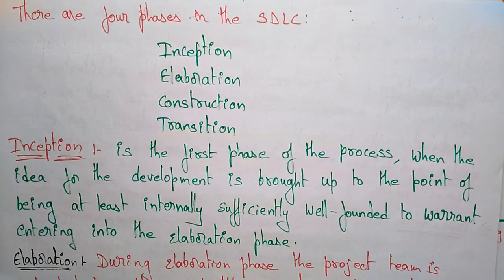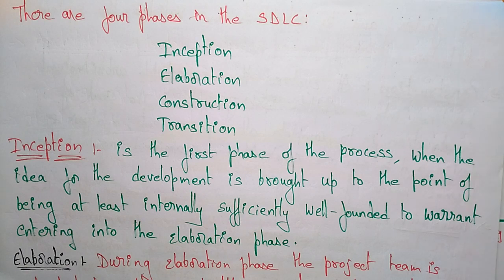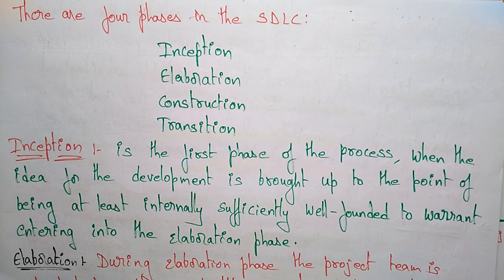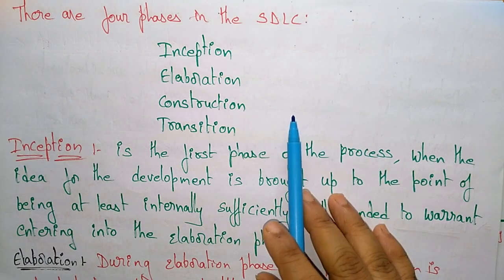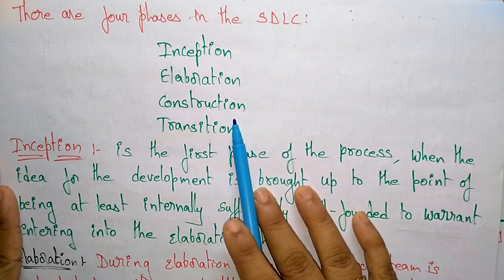Let us continue with the software development life cycle of Unified Modeling Language. In the previous video I explained a use case driven, architecture centric, and iterative process — those are the main processes that give the most benefit from UML. This use case driven, architecture centric, and iterative incremental process can be broken into phases: Inception, Elaboration, Construction, and Transition.